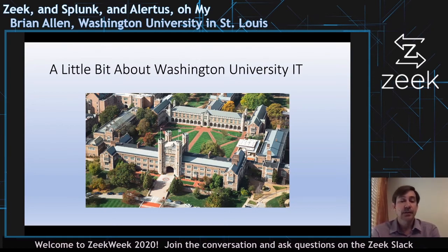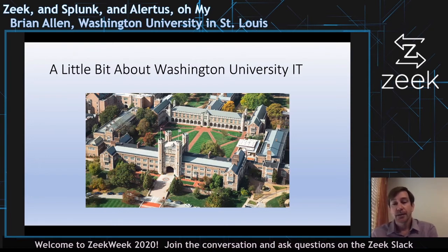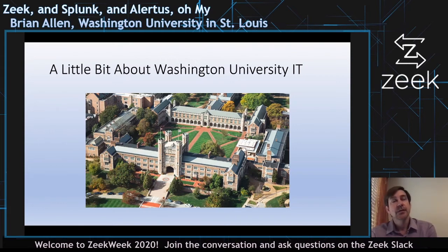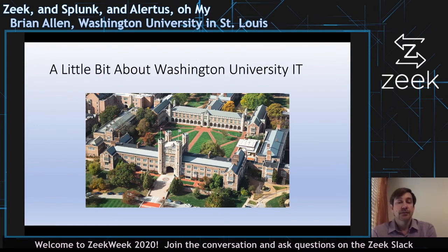This Alertus traffic can help us really speed up a search if we want to find a machine. In 2011 WashU started using Alertus — this was when universities started using mass notification tools, after Virginia Tech and some other shootings. The chancellor said everybody at WashU has to use Alertus. So all the machines on campus need to be running Alertus, even if you're not in WashU IT. That's a handy thing we can tap into with Zeek.